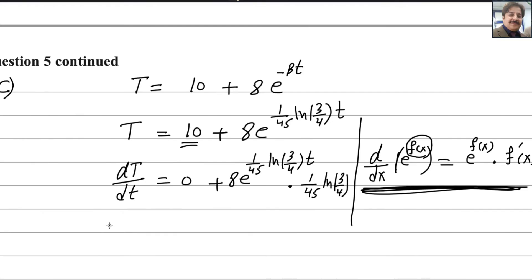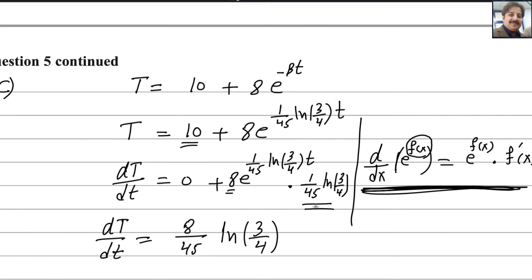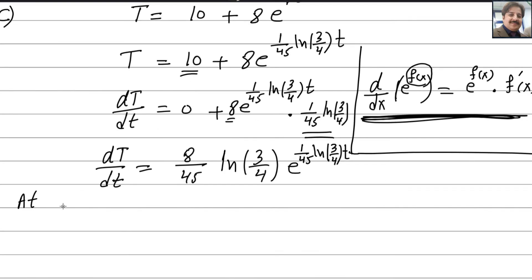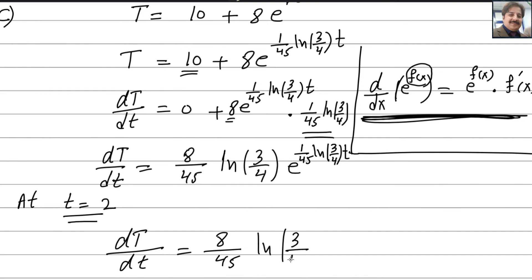So dT/dt equals 8 multiplied by 1 over 45 ln(3 over 4), times e to the power 1 over 45 ln(3 over 4) times t. That simplifies to 8 over 45 ln(3 over 4) times e to the power 1 over 45 ln(3 over 4) times t. At t equals 2 minutes, substitute t equals 2 into this expression.